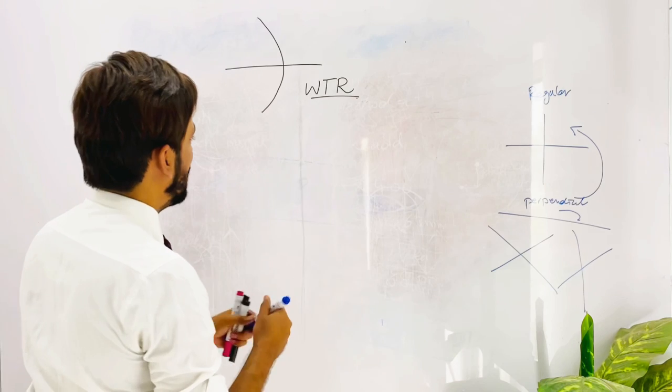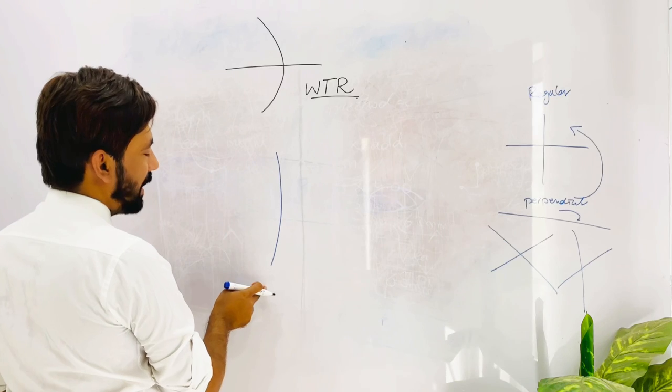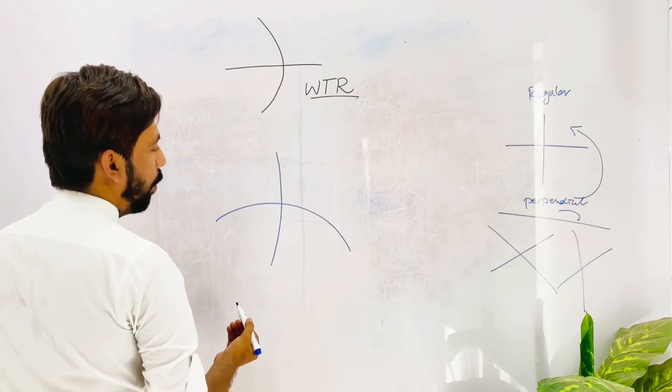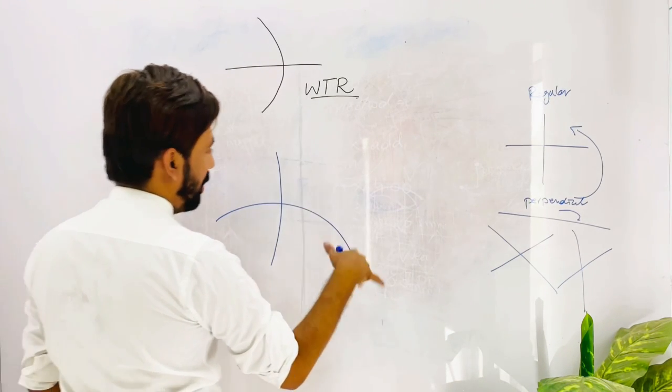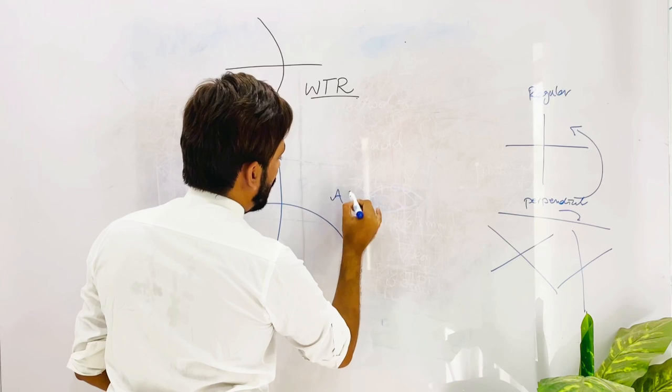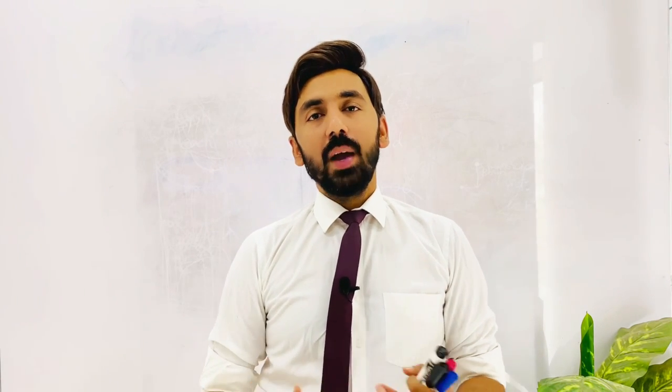In against-the-rule astigmatism, the vertical meridian is less steep and the horizontal meridian is more steep and more curved. So if the horizontal meridian is more curved or more steep, it is called against-the-rule astigmatism. Now let's discuss how we can find the type of astigmatism — whether it is mixed, compound, simple myopic, or simple hyperopic — using the optical cross.